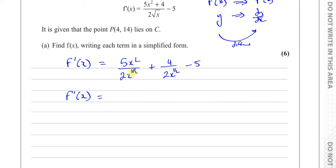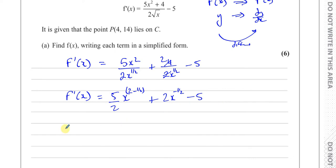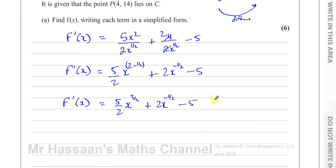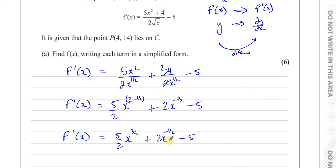Now we combine the x power terms. x to the power of 2 over x to the power of a half is x to the power of 2 minus a half, because you subtract powers when dividing in index form. The 4 and 2 cancel to give 2 on top, leaving plus 2x to the power of negative a half, and the minus 5 is fine as it is. So that simplifies to 5 over 2 times x to the power of 3 over 2, plus 2x to the power of negative a half, minus 5.